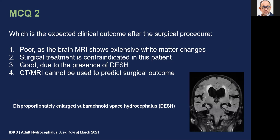However, the question now is which is the expected clinical outcome after this surgical procedure, and we have again four options. Number one is poor, as the brain MRI shows extensive white matter changes. The second option is that surgical treatment is contraindicated because of these extensive white matter changes. The third option is good, due to the presence of DASH — defined by the disproportionate ratio between the enlarged subarachnoid spaces at the level of the sylvian fissure and the narrowing of the upper convexity CSF spaces. And finally, option four is that CT or MRI cannot be used to predict surgical outcome in these patients.